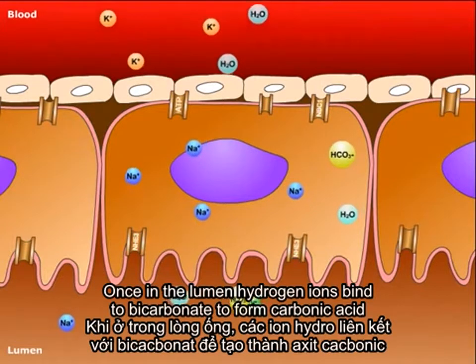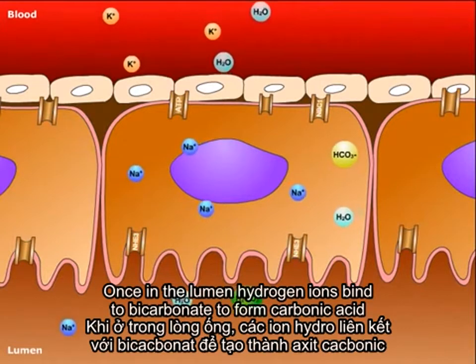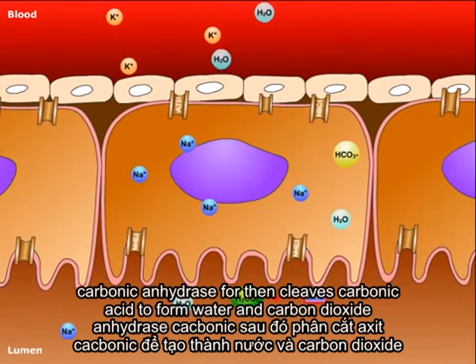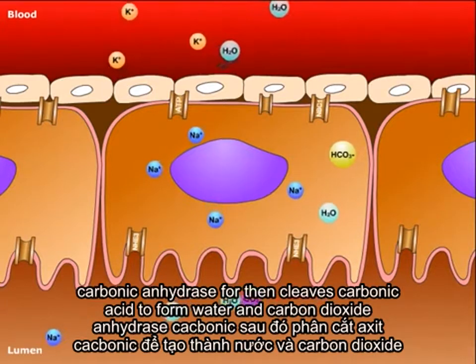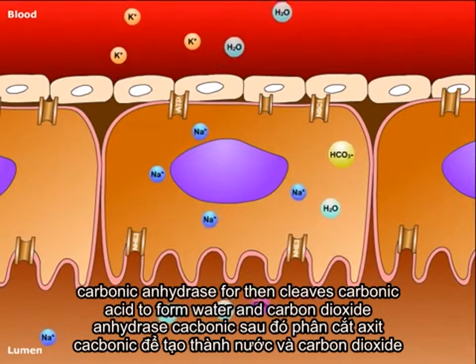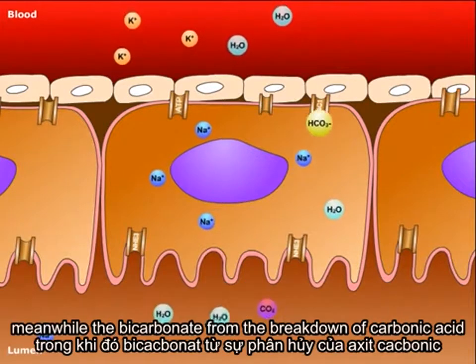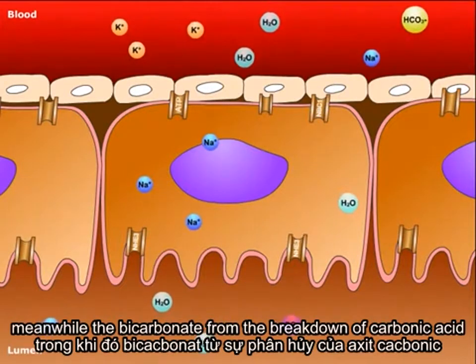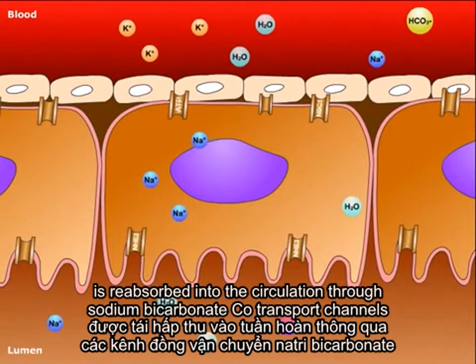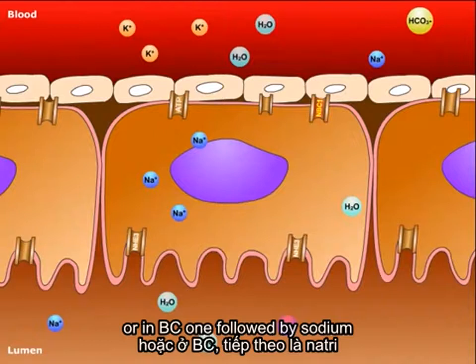Once in the lumen, hydrogen ions bind to bicarbonate to form carbonic acid. Carbonic anhydrase 4 then cleaves carbonic acid to form water and carbon dioxide. Meanwhile, the bicarbonate from the breakdown of carbonic acid is reabsorbed into the circulation through sodium-bicarbonate co-transport channels, or NBC1, followed by sodium.